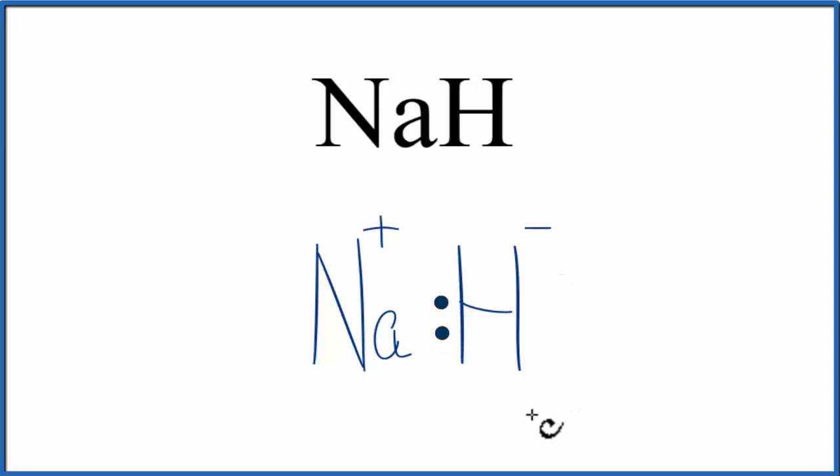We should put brackets around the hydrogen to show that it's an ion. You'll often see brackets around the positive ion as well. We need brackets here to show that these two electrons aren't shared like in a covalent compound. The sodium has transferred its valence electron to the hydrogen.